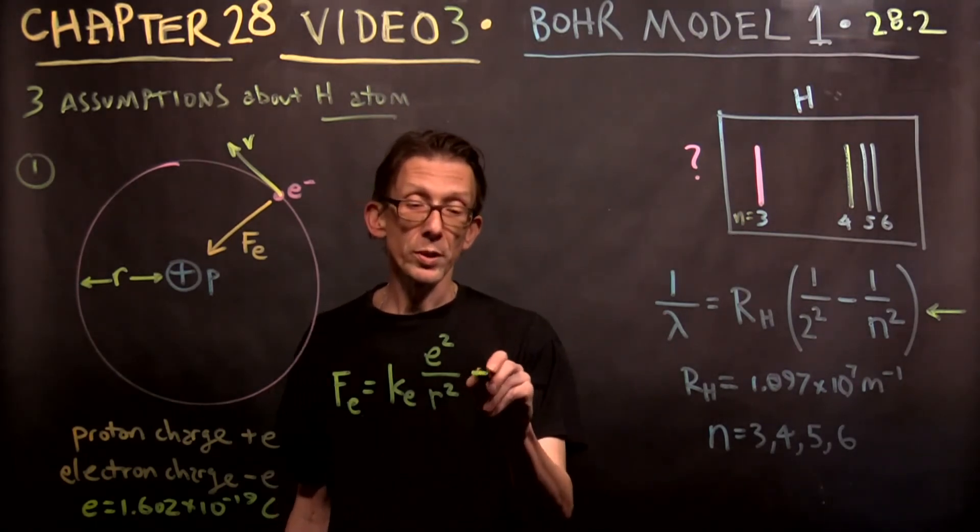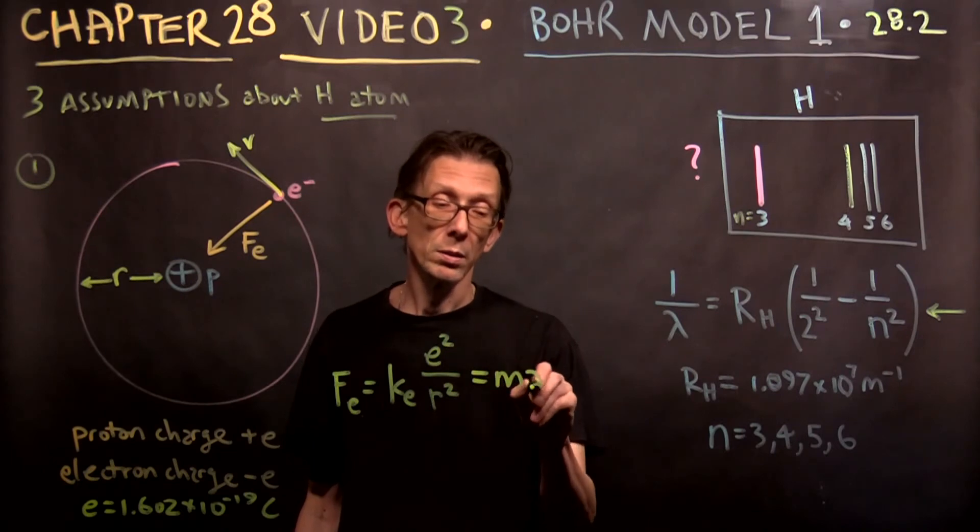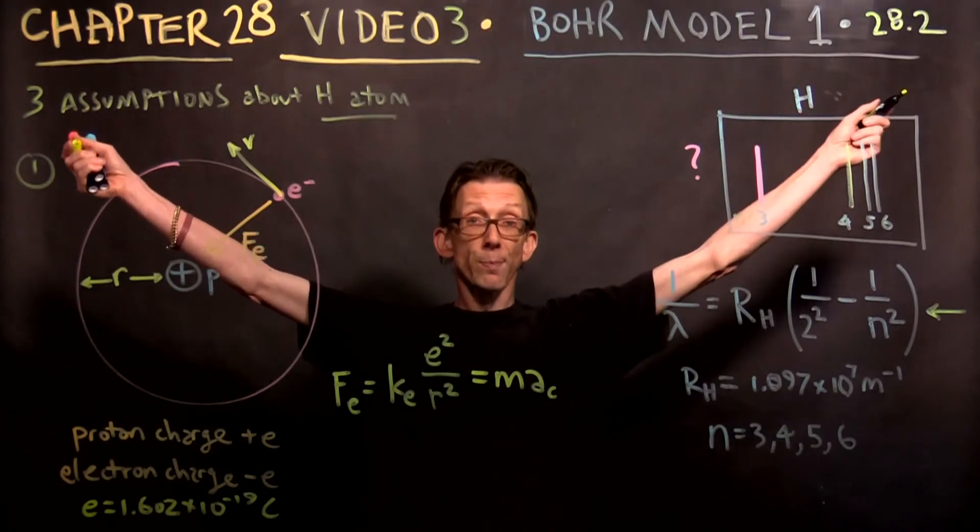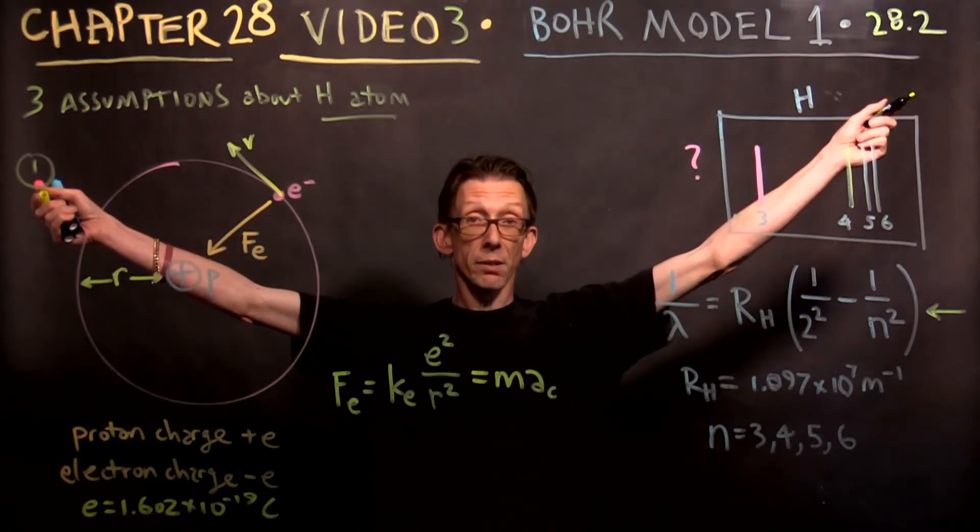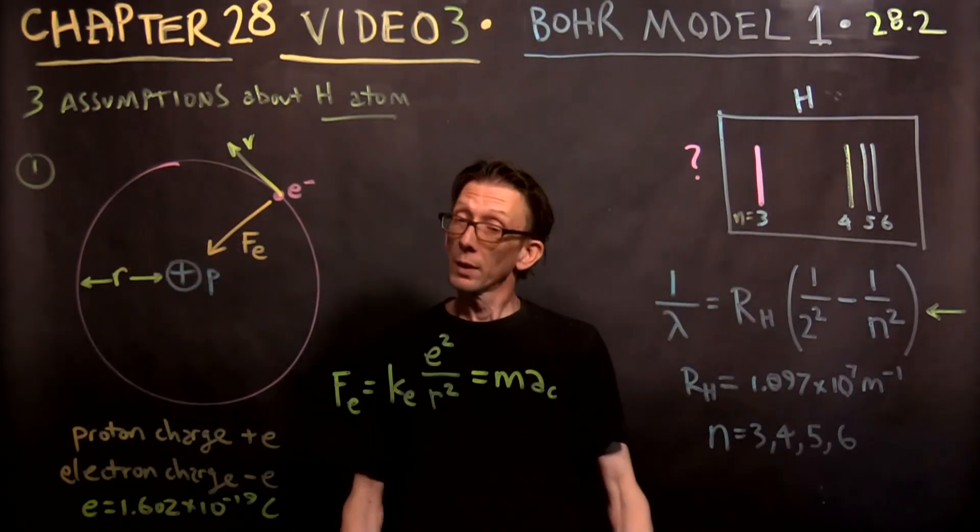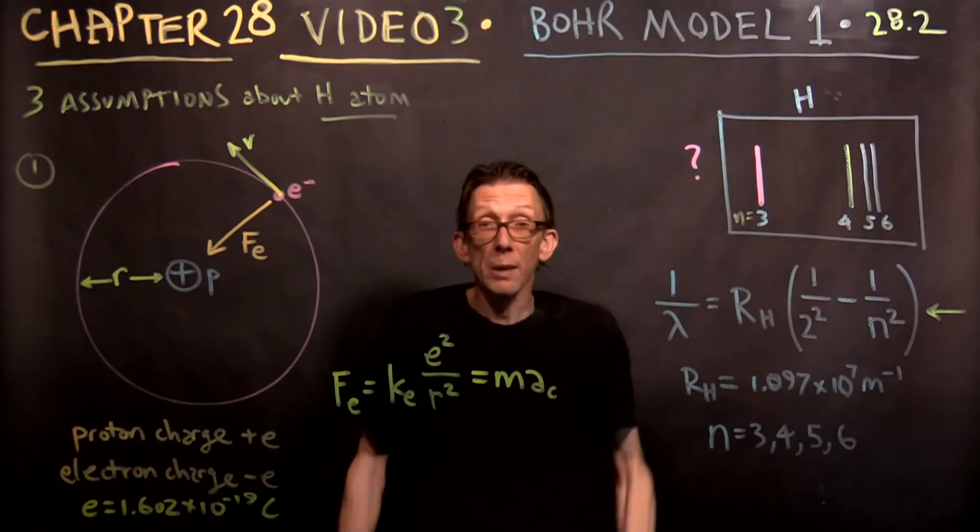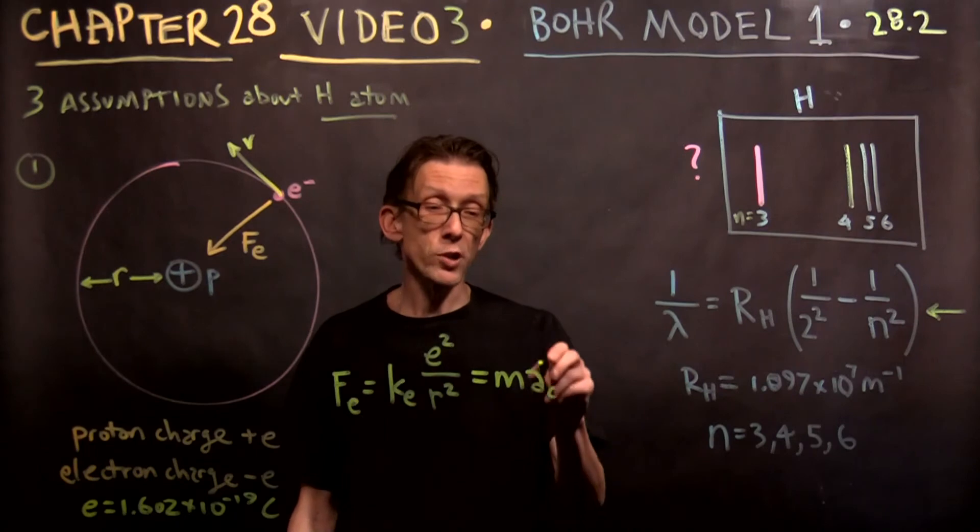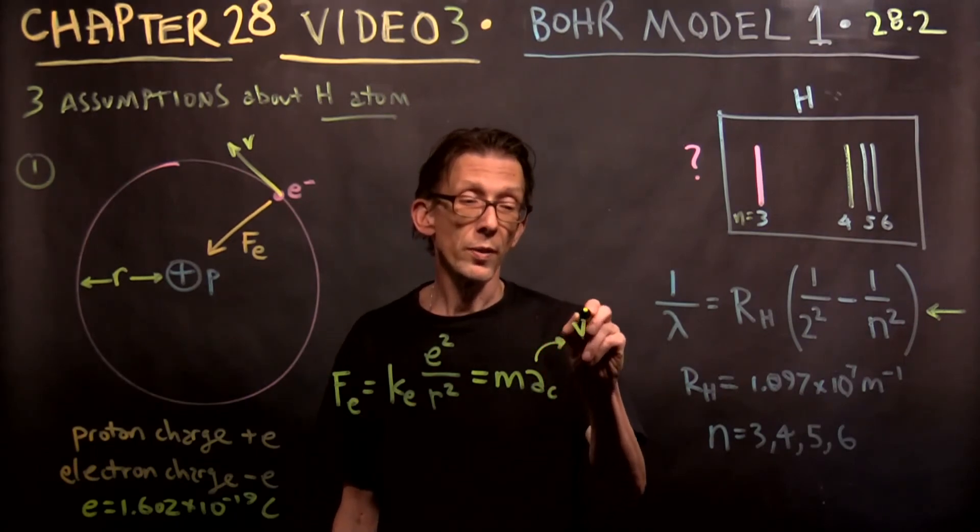So this equals m times a sub c, right? F equals ma. It doesn't go away even when you're Niels Bohr doing quantum physics. Okay. F still equals ma. But centripetal acceleration is v squared over r.